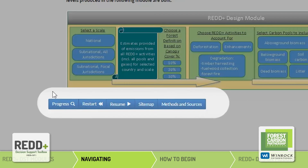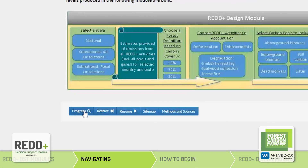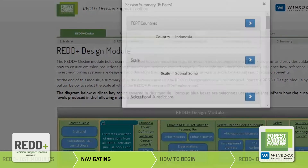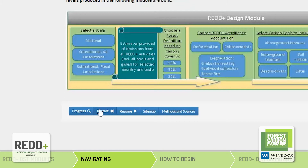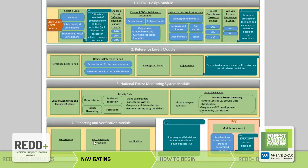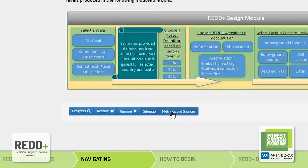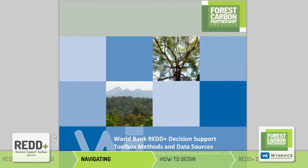At the bottom of every page, there are a series of blue buttons. The Progress button lets you review the decisions you made as you proceed through the REDDST. The Restart button allows you to return to the home page and begin a new session. If you navigate away from the page or close your browser, return to the page you were last on by clicking the Resume button. For an overview of the REDDST's modules, click the Sitemap button. The methods and data sources used to produce the REDDST's estimates can be accessed by clicking the Methods and Sources button.